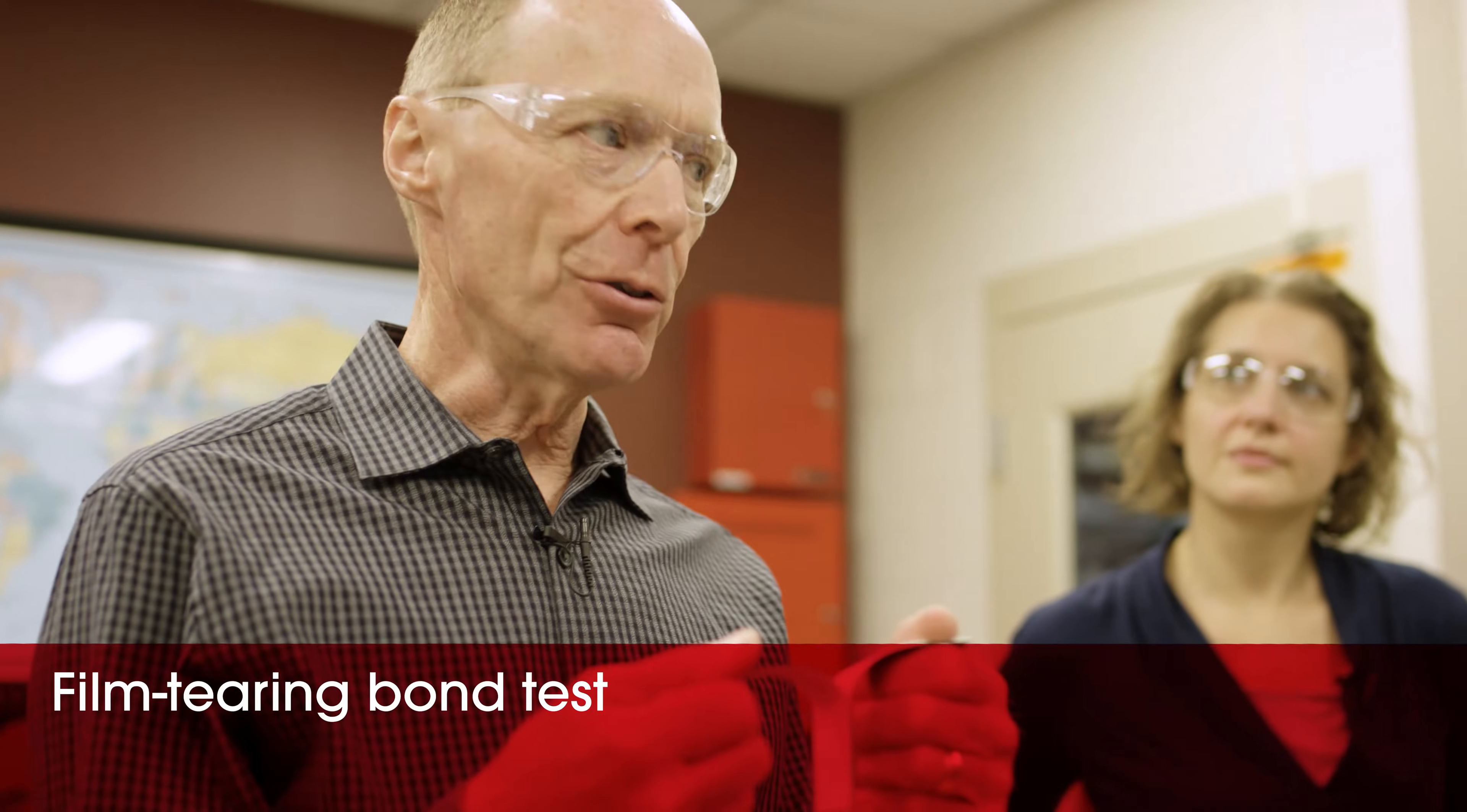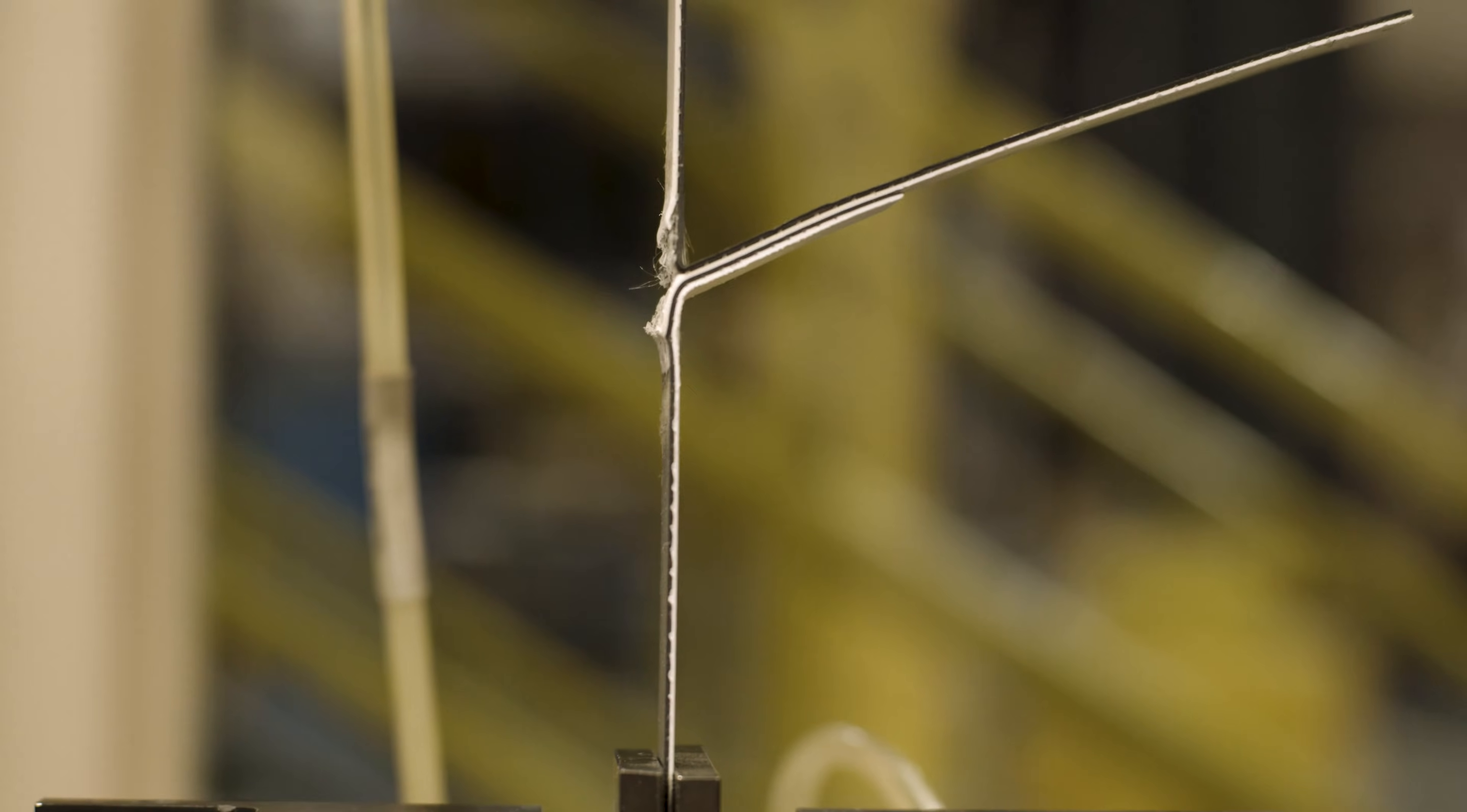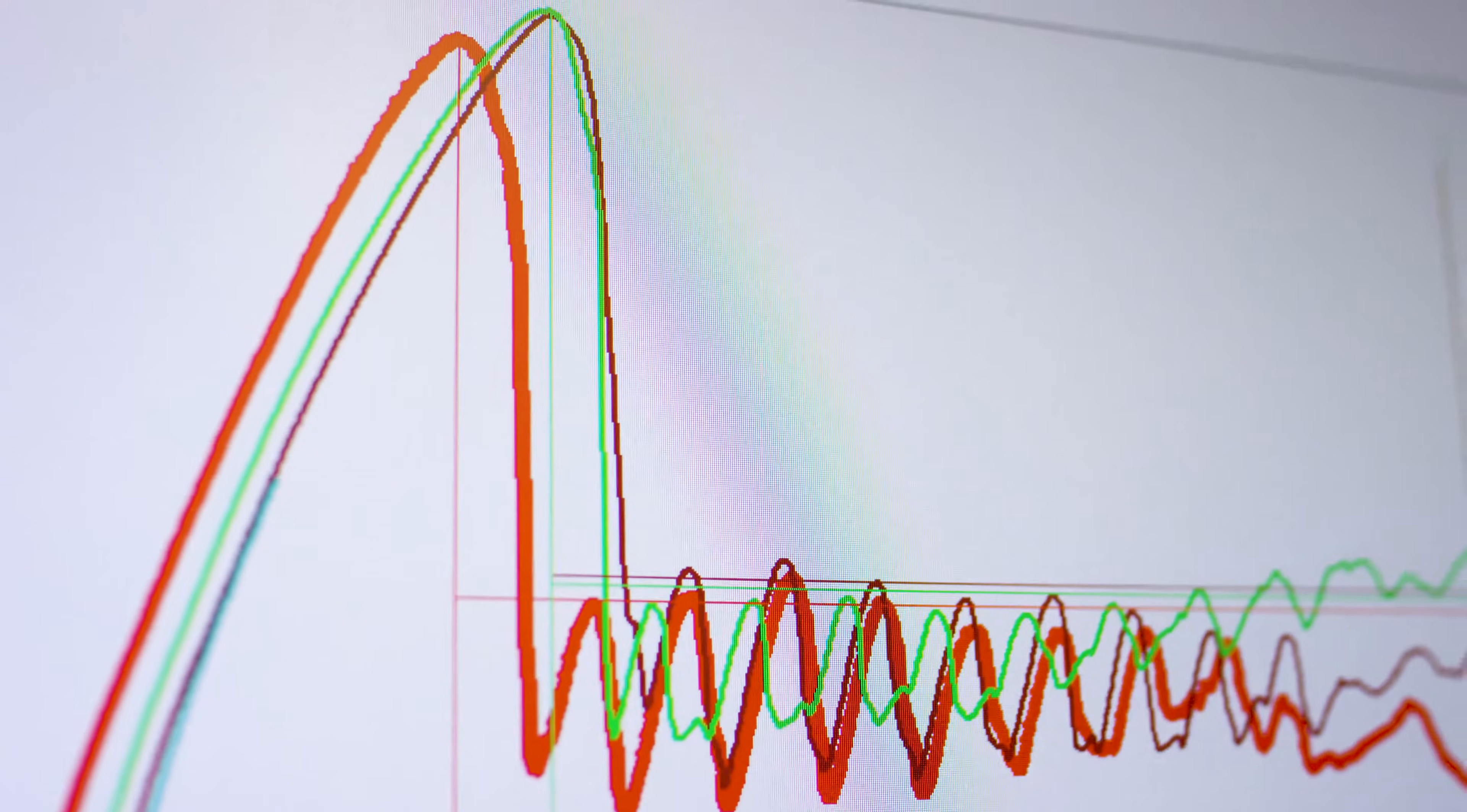What we train the contractors to do is to do a test weld and then physically pull it apart. And what Keith is doing in the QC lab here is we're doing an instrumented version of that. We're going to be pulling this to see what strength does it take to initiate the break and then to actually pull the membrane apart. And we get what's called a film-tearing bond where the membrane on one side is being pulled apart, and we're starting to expose the scrim. We'll need to see where the average comes in because I know we took a number of samples.